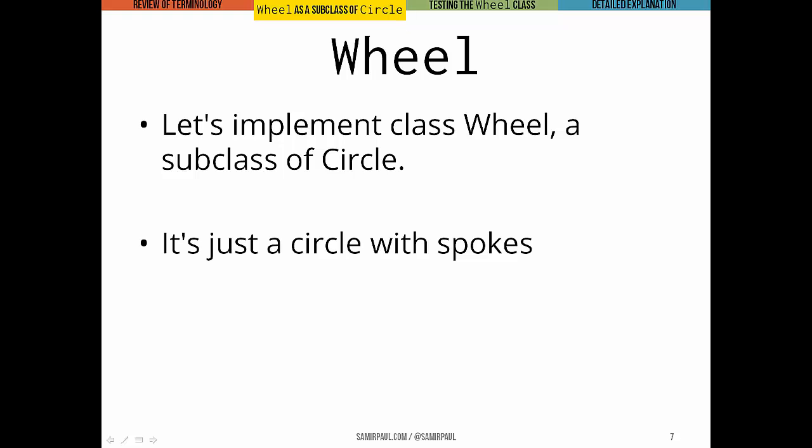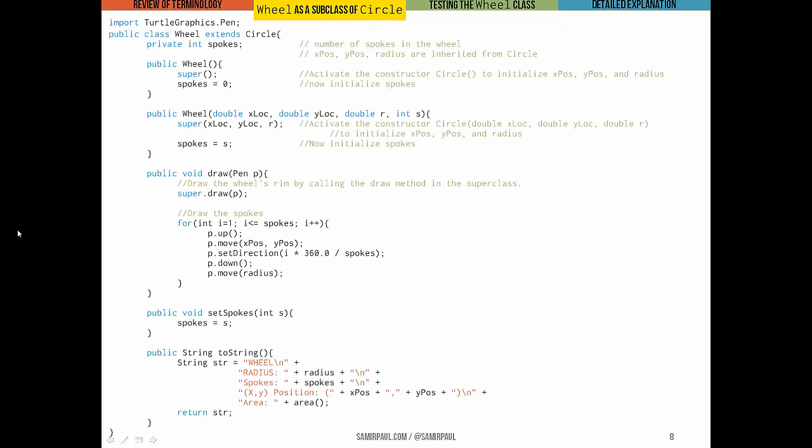So as our first sort of poke at the idea of inheritance, as an illustration of inheritance, we'll implement a class Wheel, which is a subclass of Circle. Now a wheel is really just a circle with spokes added on. So most of the code that we need to implement a wheel is already in the Circle class. I'll first present really briefly the code, and we'll show the testing of the code. We'll go through some of the comments, and then we'll do a detailed explanation.